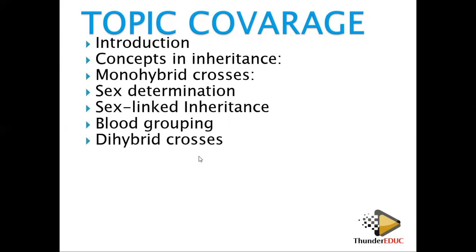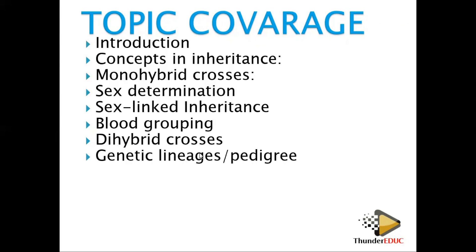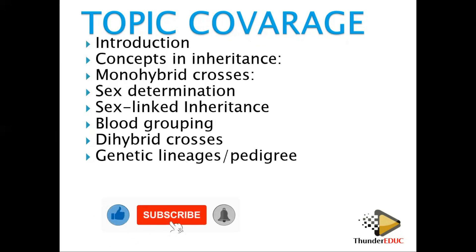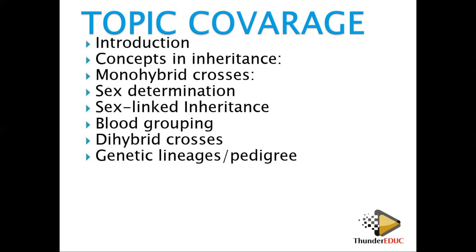We'll also cover dihybrid crosses, which involve inheritance of two characters — 'di' means two. Then genetic lineages or pedigrees, where you trace characters in your family, mostly looking at disorders that can be inherited.